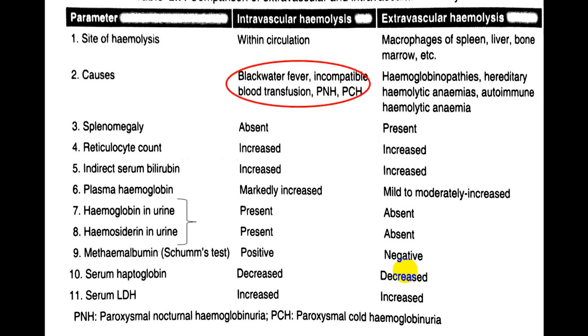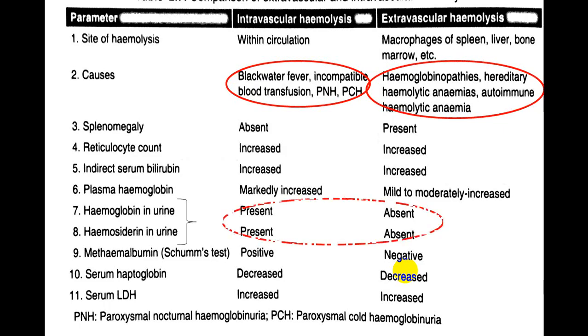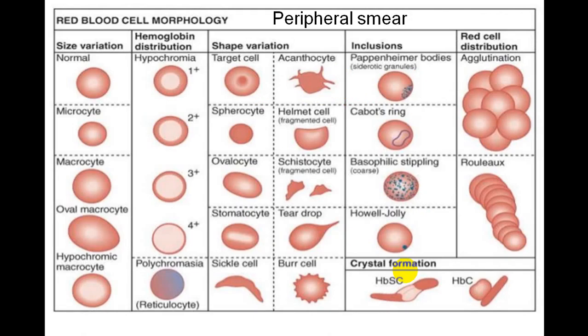Whenever you see hemoglobinuria, try to look at the peripheral smear because it gives a good idea. There are different shapes of RBC which can be detected in a peripheral smear, and if you see those shapes you can suspect some of the specific disorders.